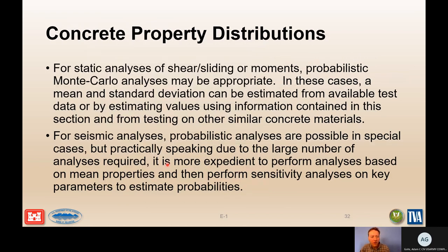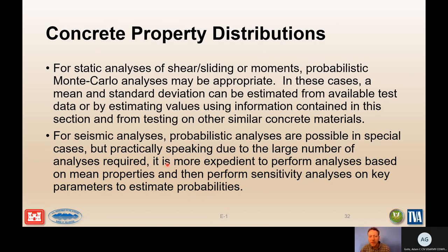Once you have your properties — mean and standard deviation — and you go into your analysis: for static analysis you can often do a Monte Carlo analysis sampling from those distributions. For seismic analysis, depending on complexity, that may not be feasible since these analyses can take very long to run. In that case, run mean values and do sensitivity runs on the bounds — plus or minus standard deviations — to understand how the structural response is affected by material property variability, then discuss those results to come up with probability estimates.